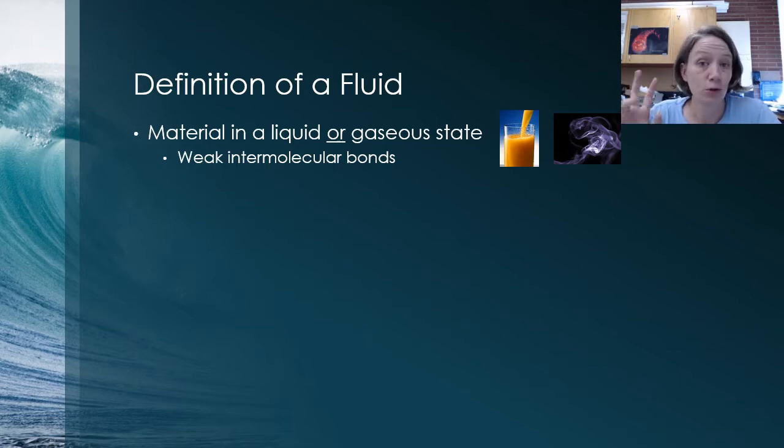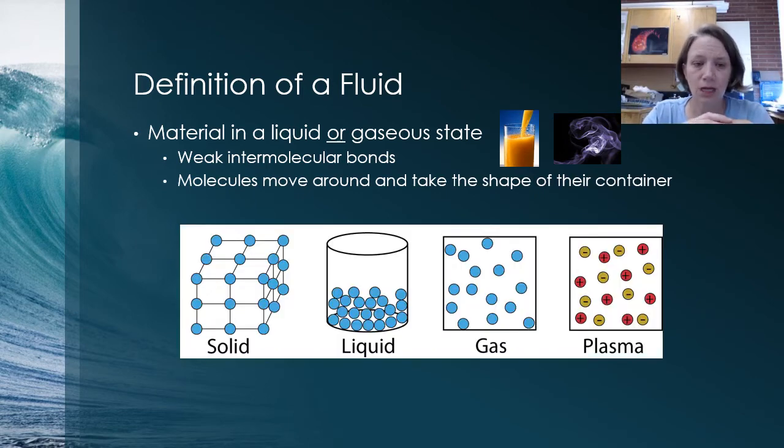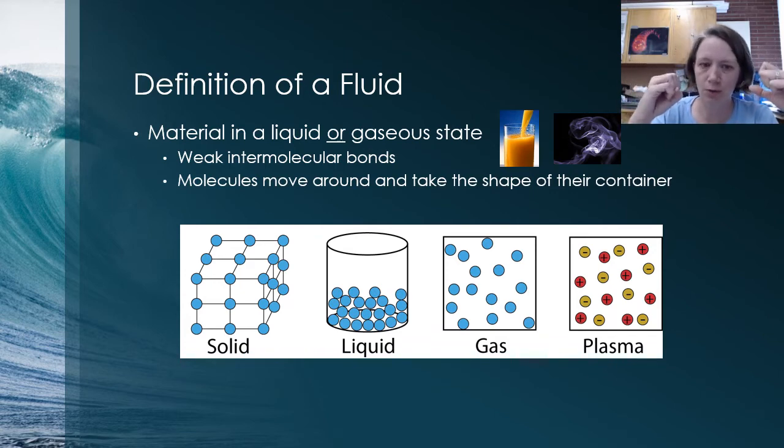The thing that characterizes fluids is that they have weak intermolecular bonds. This means that the molecules inside a fluid can actually move around relatively easy, they're not stuck to each other and they will generally speaking take the shape of their container. On solids, obviously, those molecules are held in place by really strong rigid bonds and one part of the solid can't migrate to the other part.